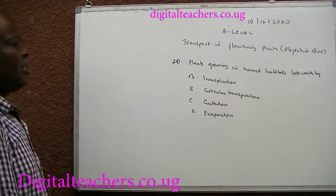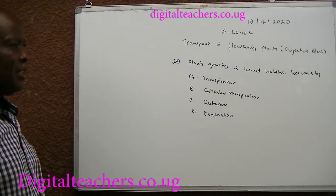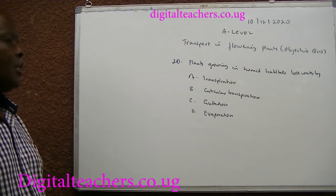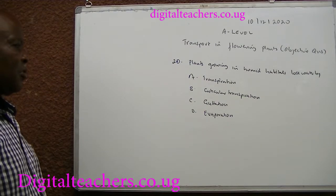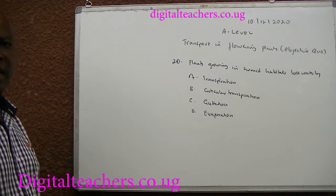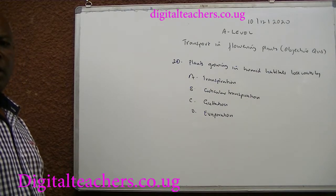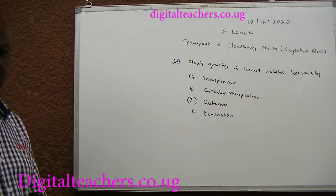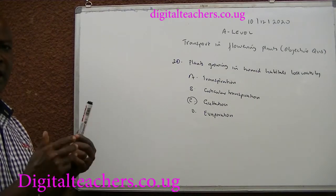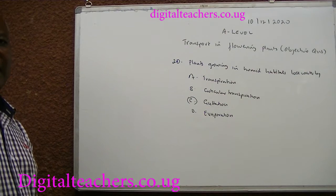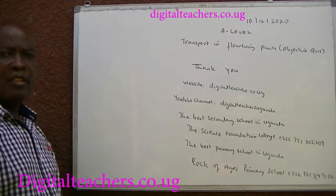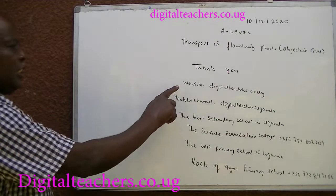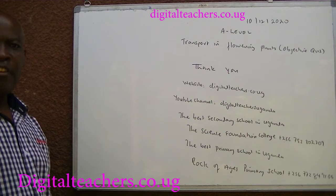Number 20. Plants growing in humid habitats lose water by A. Transpiration. B. Cuticular transpiration. C. Guttation. D. Evaporation. You can pause and answer. The answer is C. Guttation.